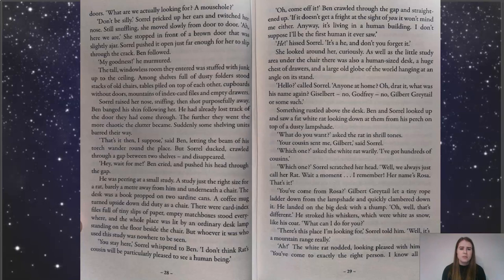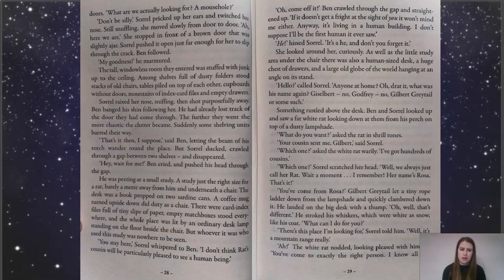Sorrel raised her nose, sniffing, then shot purposefully away. Ben banged his shin following her. He had already lost track of the door they'd come through. The further they went in, the more chaotic the clutter became. Suddenly, more shelving units barred their way. 'Well, that's it then, I suppose,' said Ben, letting the beam of his torch wander around the place. But Sorrel ducked, crawled through a gap between two shelves, and disappeared. 'Hey, wait for me!' Ben cried, and pushed his head through the gap. He was peering at a small study — a study just the right size for a rat, barely a metre away from him and underneath a chair. The desk was a book propped on two sardine cans. A coffee mug turned upside down did duty as a chair. There were card index files full of tiny slips of paper. Empty matchboxes stood everywhere, and the whole place was lit by an ordinary desk lamp standing on the floor beside the chair. But whoever used the study was nowhere to be seen.